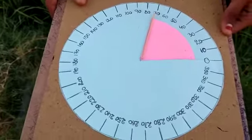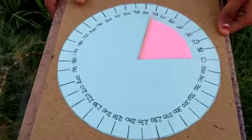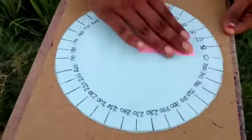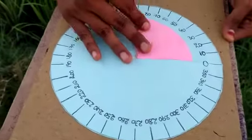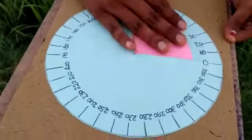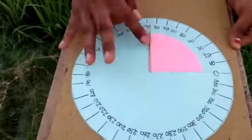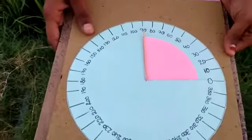Next one, right angle. Right angle means exact 90 degrees. This is right angle.